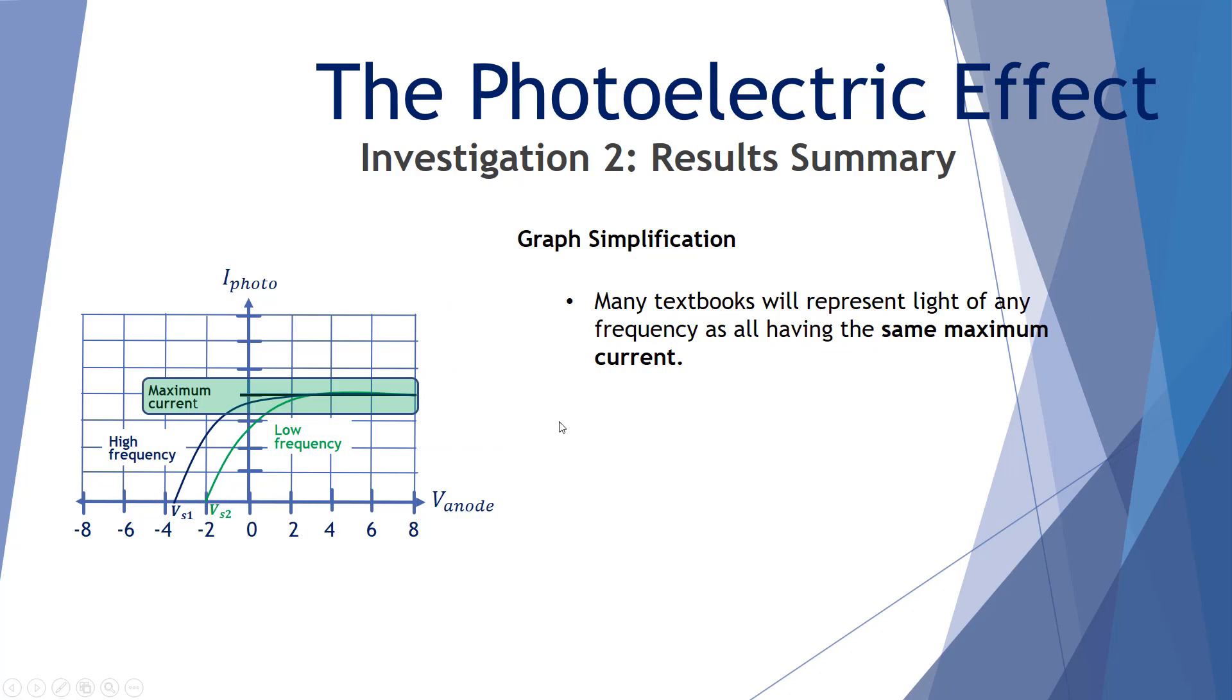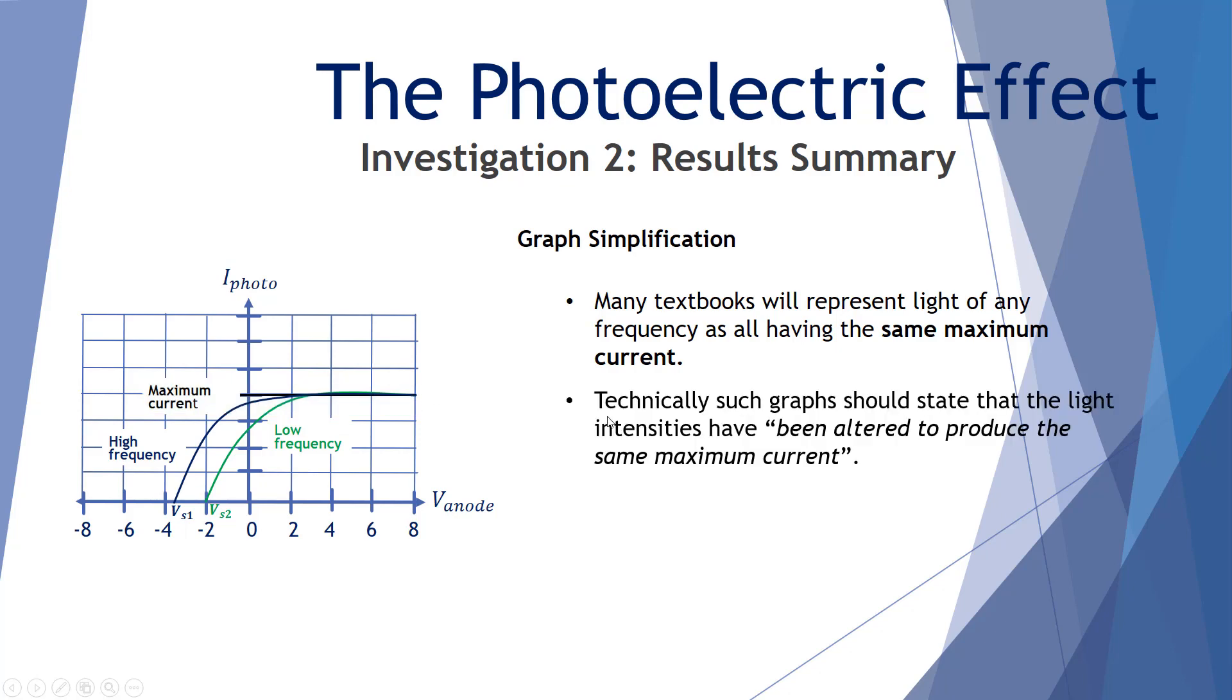However, notice that in many textbooks, there's a graph simplification. Many of the textbooks we'll look at will represent all frequencies of light as having the same maximum current. This is common in textbooks and also sometimes in the VCE exam papers. Technically, such graphs should state the light intensities have been altered to produce the same maximum current. So we have here our blue line, which is our high frequency, and our green line, which is our low frequency. Now, from our previous results, we know that they would be separated with the maximum current. However, it's common to show both frequencies, high and low, at the same maximum current in positive voltage anode section.